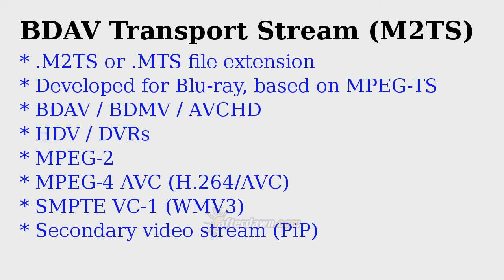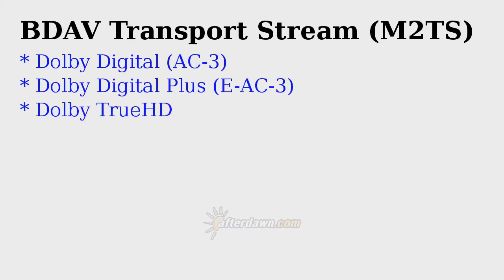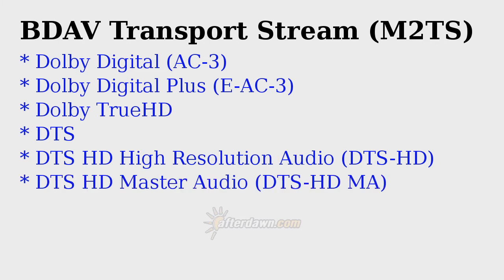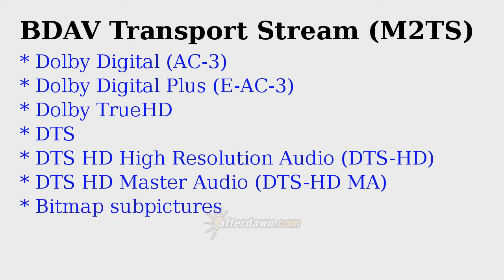A number of different audio formats may be used in the M2TS container. They include Dolby Digital, Dolby Digital Plus, Dolby TrueHD, DTS, DTS-HD High Resolution Audio, DTS-HD Master Audio, and also uncompressed audio. Of these, Dolby TrueHD, DTS-HD Master Audio, and uncompressed audio are all considered lossless, meaning the audio stream will sound exactly the same as the uncompressed source it was encoded from. M2TS files may also have subpictures, which are similar to those used for DVD subtitles but with a few more advanced features. Unlike DVD-VOB files, BDAV transport streams may also contain text-based subtitles.